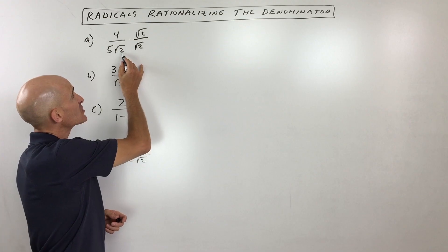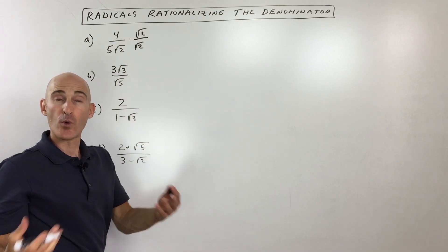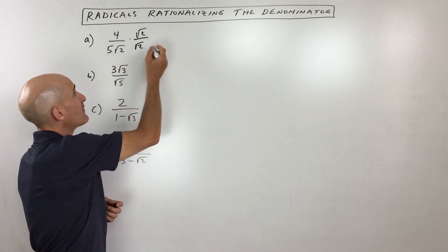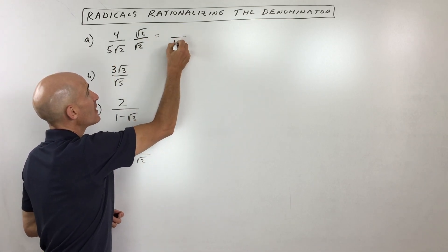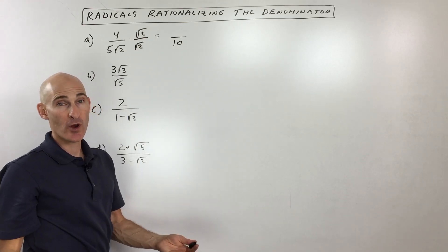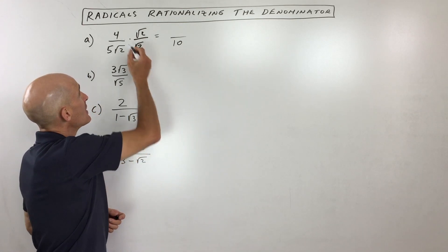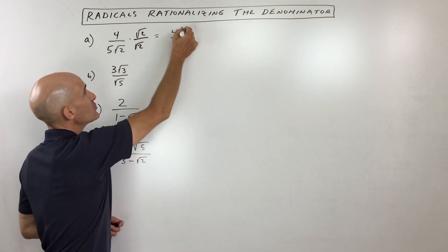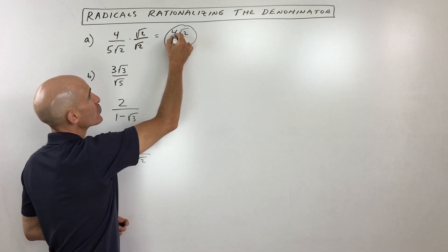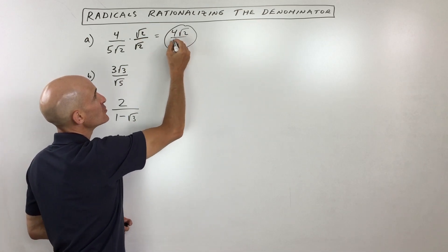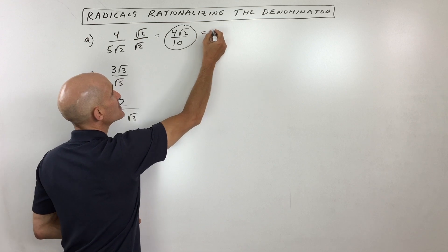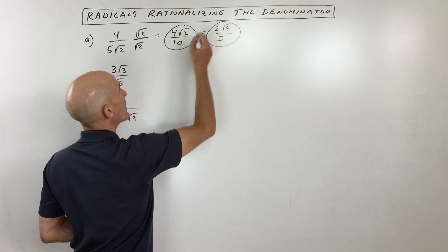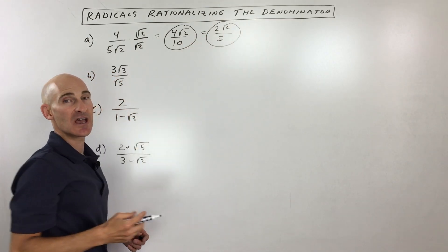The reason is that square root of two times square root of two is square root of four. And what is the square root of four? It's two. And then two times five gives us ten. So effectively, we've gotten rid of the radical in the denominator. In the numerator, we just multiply across — four times the square root of two. But there's a four and ten you can reduce: four divided by two is two, ten divided by two is five. So you want to keep reducing those two integers as far as you can.